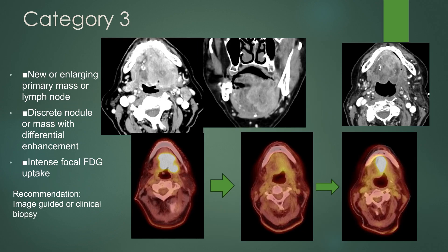Category 3 is a new or enlarging primary mass or lymph node — a discrete nodular mass with differential enhancement and intense focal FDG uptake. The recommendation is image-guided or clinical biopsy. This was a large floor-of-mouth cancer involving the oral tongue, across the midline. The first post-treatment PET showed no abnormal or mass-like uptake, but routine surveillance led to a follow-up PET showing a new, irregularly enhancing, almost necrotic mass in the anterior floor of mouth with avid FDG uptake — confirmed as tumor by biopsy.